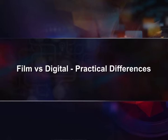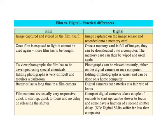Film versus digital: practical differences. In a film camera, images are captured and stored on the film, but in a digital camera, the image is captured on the image sensor and recorded to a memory card. In a film camera, once the film is exposed to light, it cannot be reused. With a digital camera, only a memory card is used — images can be downloaded to a computer and the card can be wiped and reused.